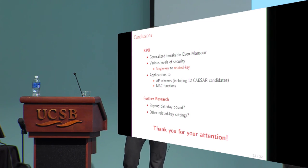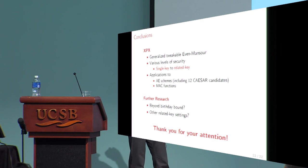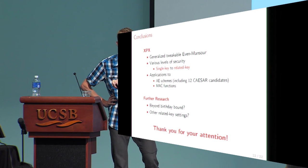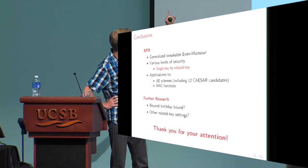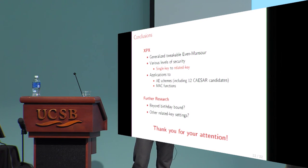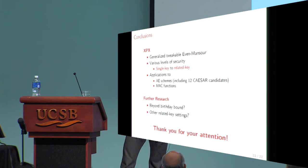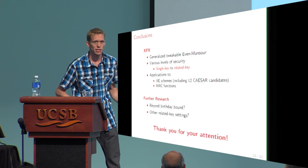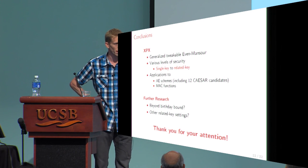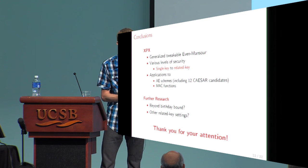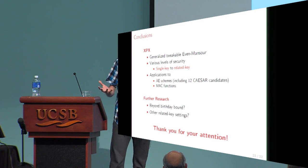To conclude, we introduced XPX, which can be seen as a generalization of tweakable Even-Mansour — not in the sense of Cogliati et al. with multiple rounds, but by looking at a single round and checking what level of security we can achieve. We achieve various levels of security, ranging from insecurity to single-key security to related-key security. The result has various applications, covering many CAESAR candidates and various hash and MAC functions. Future directions include multiple rounds for beyond-birthday-bound security — relevant for small permutations — and exploring other settings where related-key security matters. Thank you for your attention.